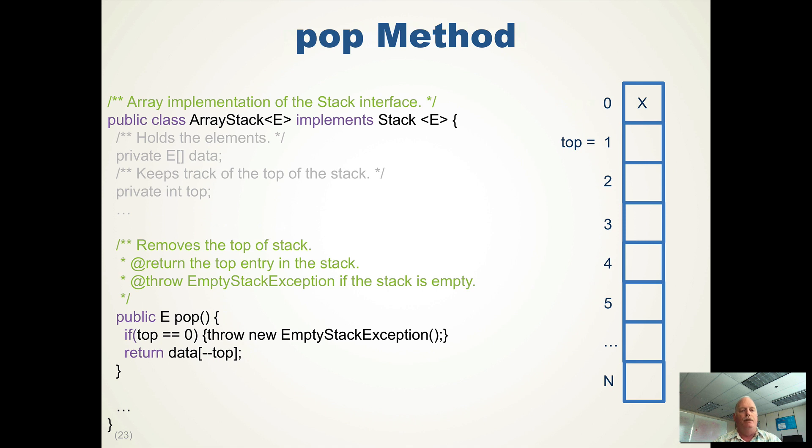Well, in pop, we again check to see if it's empty, throw the exception, and then if we don't throw the exception, we return data at top or minus minus top, which decrements top and gives you the thing that's smaller than top. So that will return the data at zero. And we've done it. We now have an empty stack because top is zero.